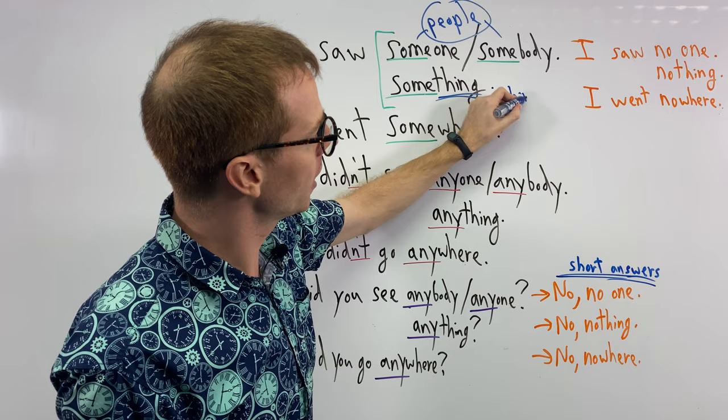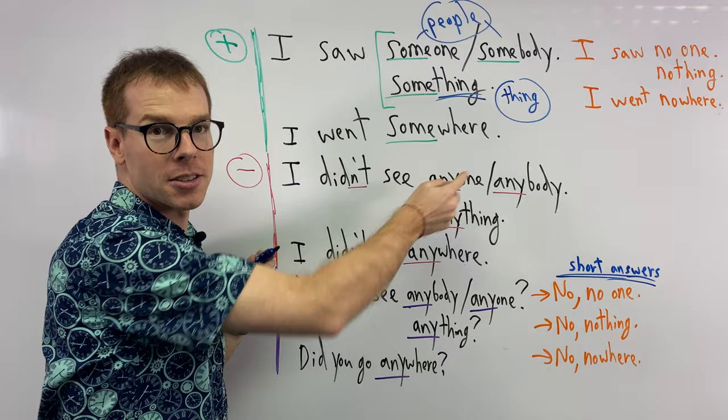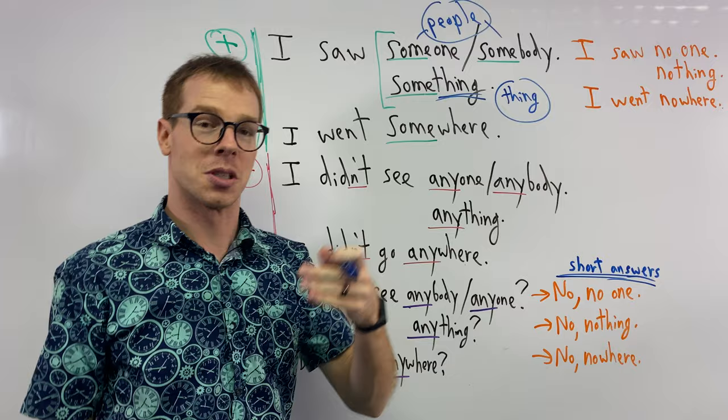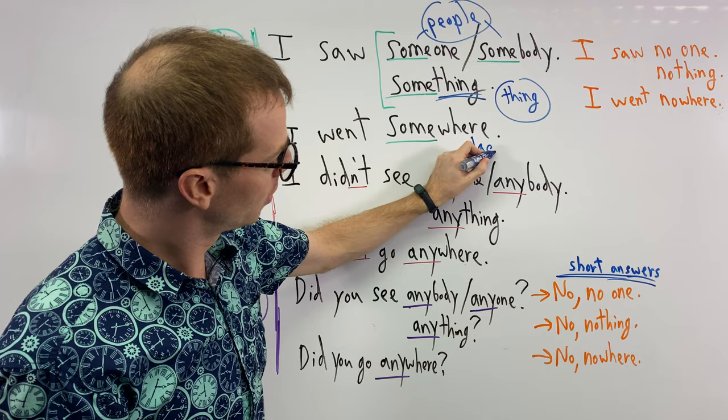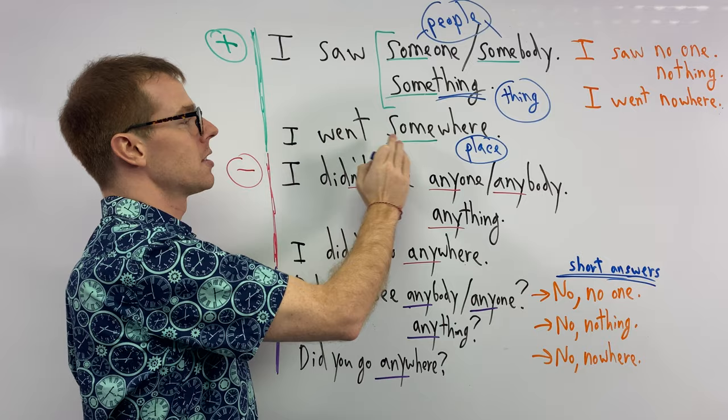And then last one, if you say, oh I went somewhere, I went to Marina Bay, I went to Bugis, I went to Singapore, those are the places. So if you say I went somewhere, that's instead of using the place. I went somewhere.